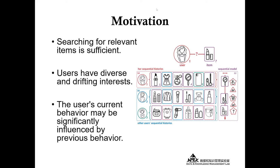Thirdly, users' certain behavior may be significantly influenced by their previous behavior. For example, when we observe that a user has recently purchased a cell phone in the short term, the probability that she will purchase a cell phone again now is small. These motivations ask us to incorporate users' feedback into the model.